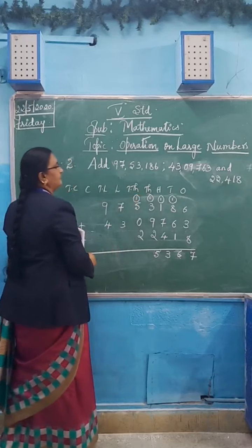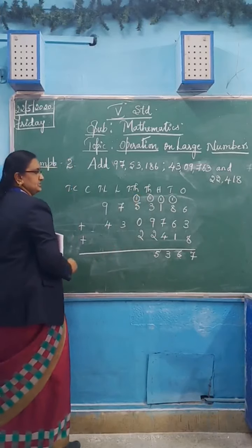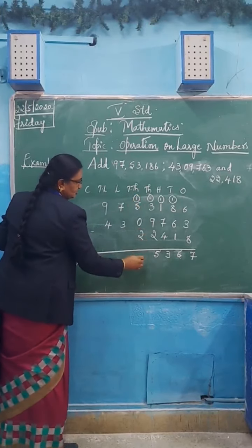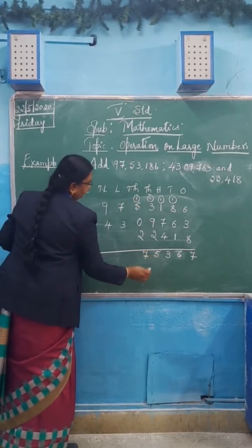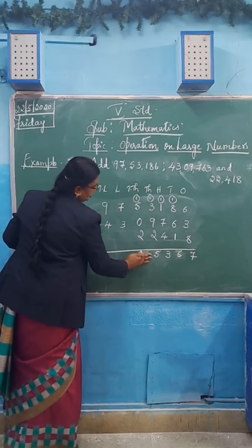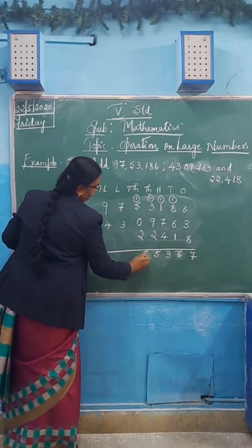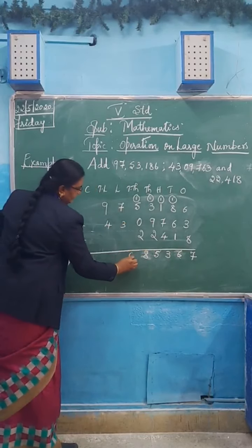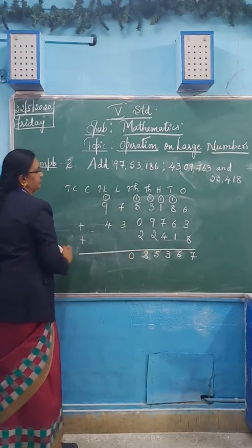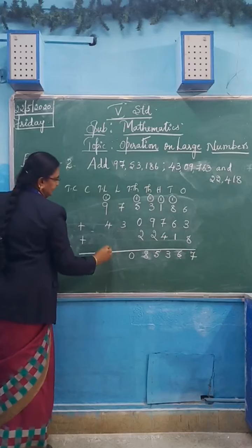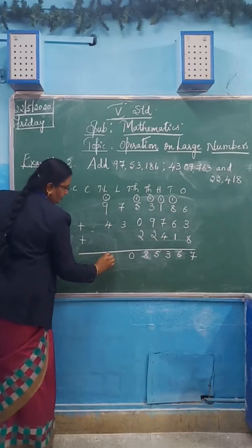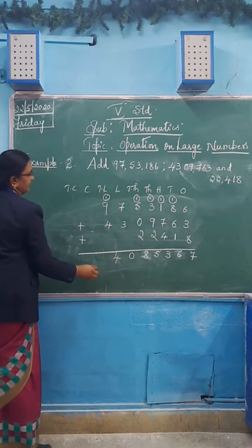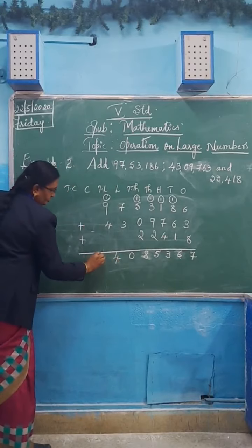Carry one to ten thousands place. One plus five is six; six plus two is eight. Seven plus three is ten — write zero here, carry one to ten lakhs place. One plus nine is ten; ten plus four is fourteen — write four in ten lakhs place and one in crores place.